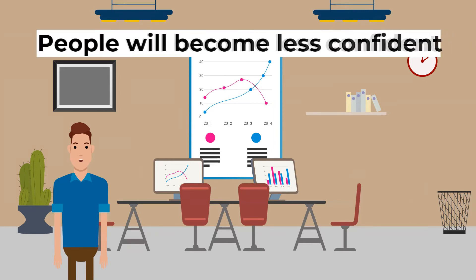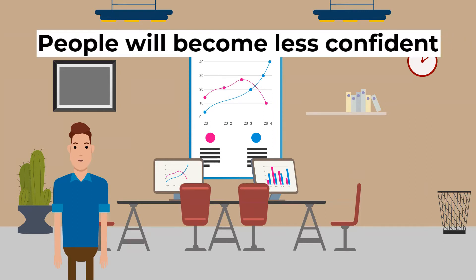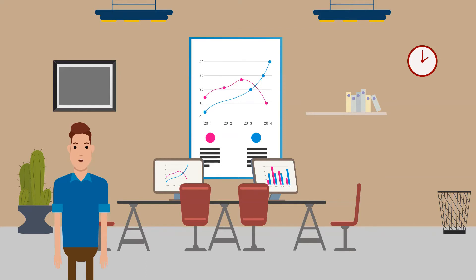Third, people will become less confident about borrowing and spending if interest rates rise. The fall in consumer and business confidence leads to a fall in consumption and investment, causing a fall in aggregate demand. On top of this, other loans such as mortgages will become more expensive to repay, so consumers have to dedicate more of their income to paying back these debts. This means they have less income to spend on goods and services, so consumption will fall, causing aggregate demand to fall.